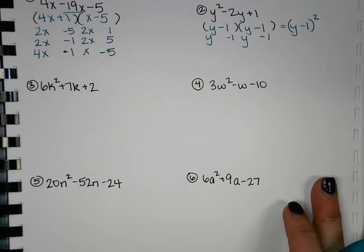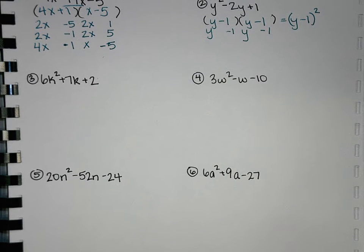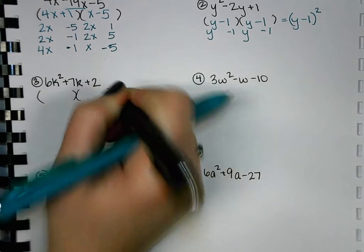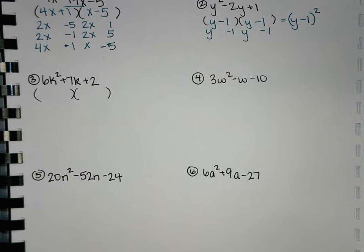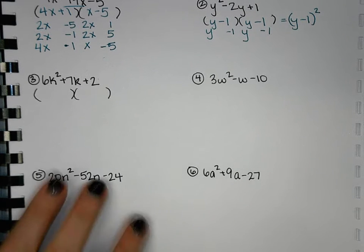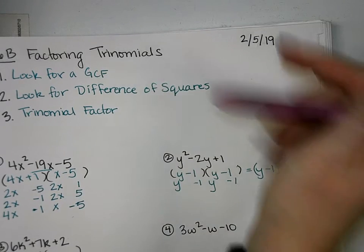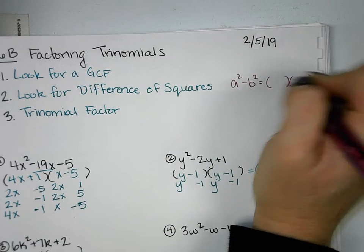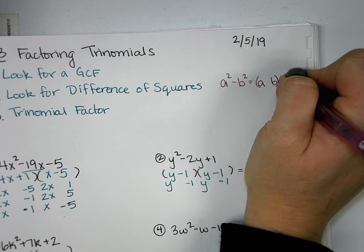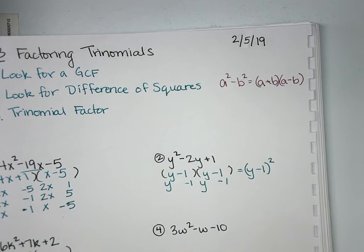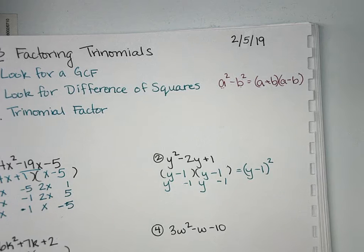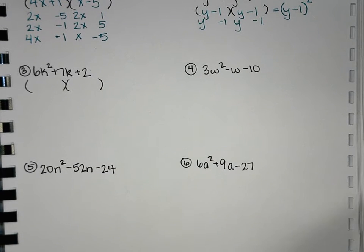Number three. Do we have a GCF? No. Is it difference of squares? No. So then let's do our trinomial factoring. But what is the difference of squares? The difference of squares is the one that looks like A² minus B². And we factored it by square rooting each one, and then we put a plus sign in one, a minus sign in another. That's what we're looking for - the binomial perfect squares and subtraction.